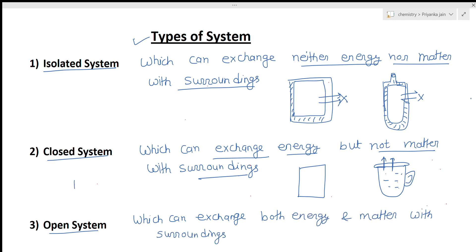The third type of system is called an open system, which can exchange both energy and matter with the surroundings. Suppose we take a cup of tea that is open. This cup of tea can exchange both the vapors of the tea as well as the heat — both can pass from it. So this is called an open system.